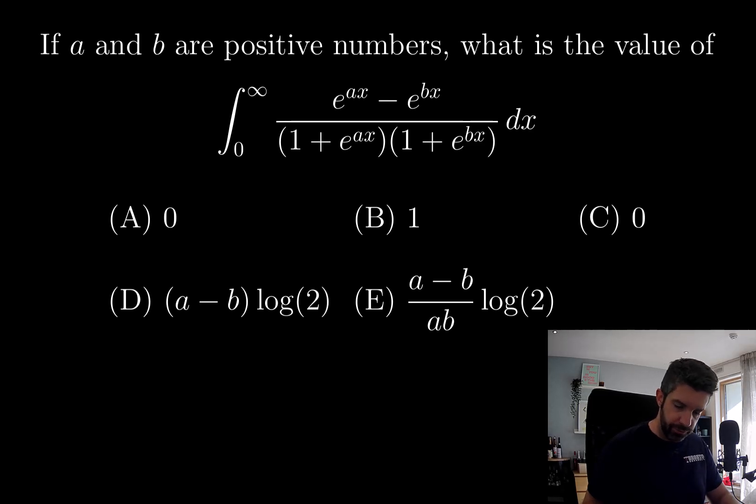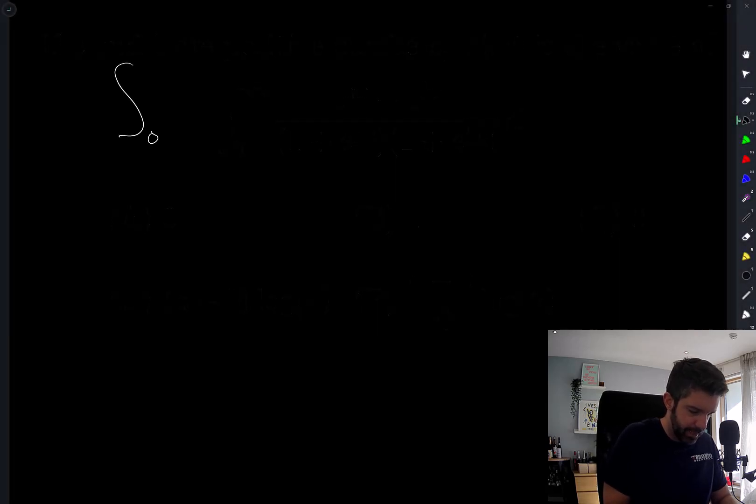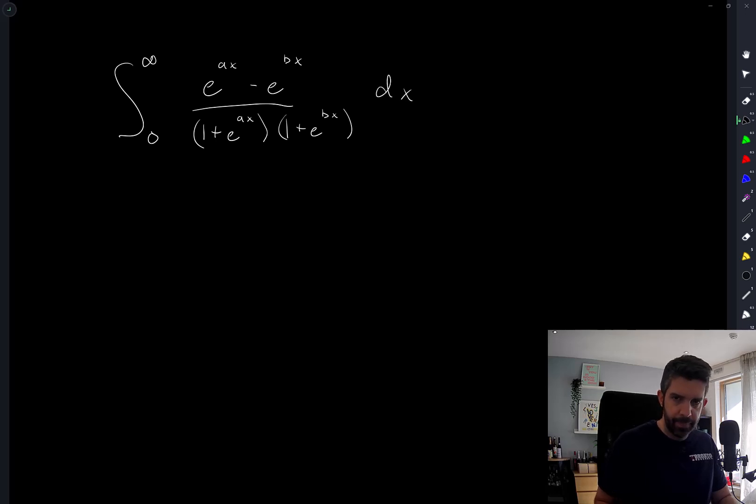Okay, a and b are positive numbers. I don't know if there will be a way of figuring this out by analyzing this in some clever way or if we'll actually have to work out the answer. I can immediately eliminate, I don't typically like using process of elimination to solve these problems, but I can eliminate the first option zero because this integrand is either positive everywhere or negative everywhere, depending on whether a is larger than b or vice versa. So the integral is going to be positive or negative. It's not going to be zero.